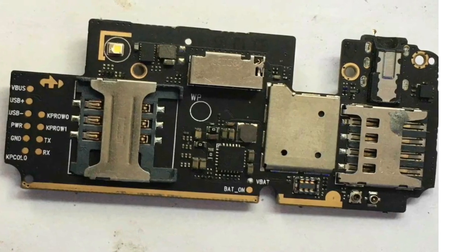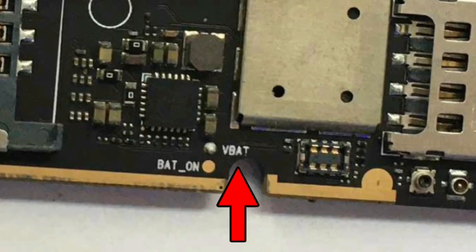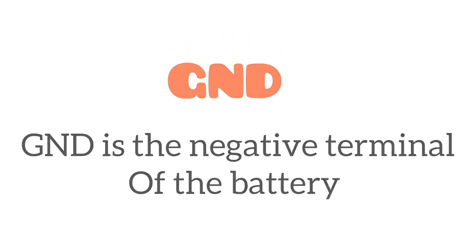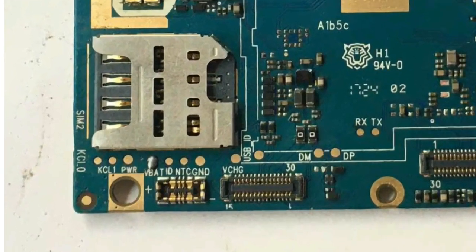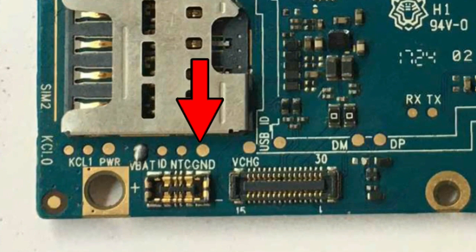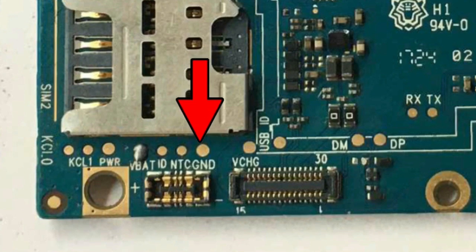Here is another example of a VBAT. Next, we have the GND, which is the negative terminal of the battery. As you can see, this is the GND, close to the battery terminal also.